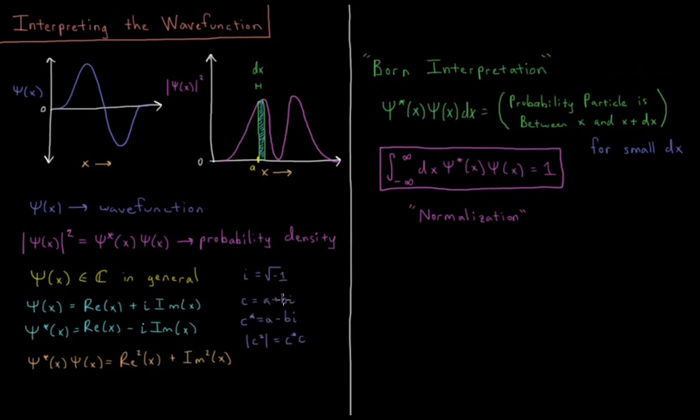So the wave function psi of x is equal to its real part plus the square root of minus one times its imaginary part. And then its complex conjugate is you keep the real part the same, and you switch the imaginary part.